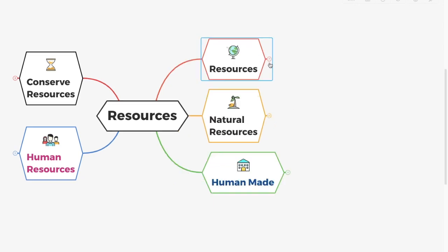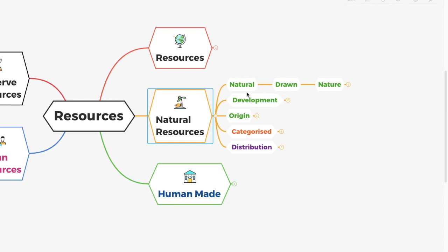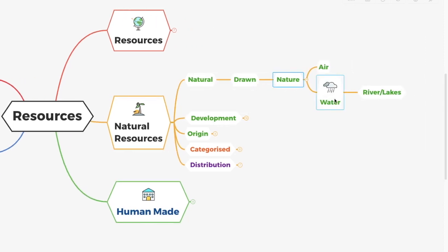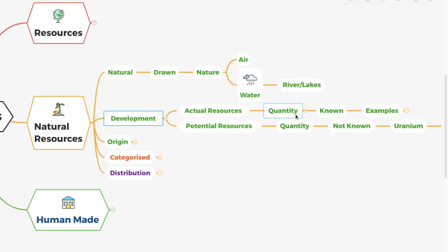Let's look at natural resources. Natural resources are those resources that are drawn from nature, like air, water, rivers, lakes, etc. They are classified into different groups depending on their development and use. Here you have two types: actual resources and potential resources. Actual resources are those whose quantity is known to us.